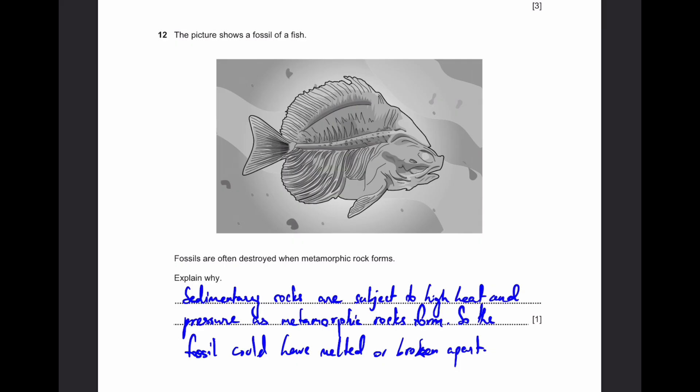Question 12. The picture shows a fossil of a fish. Fossils are often destroyed when metamorphic rock forms. Explain why. Fossils form in sedimentary rocks. But then, sedimentary rocks are subject to high heat and pressure. Only then, they can make metamorphic rock. So, the fossil would have melted or broken apart because of that high heat and pressure. That's why that's the answer.